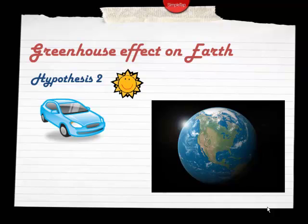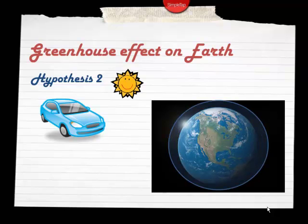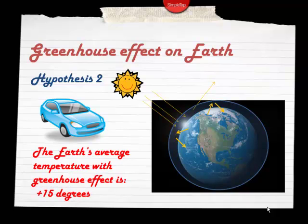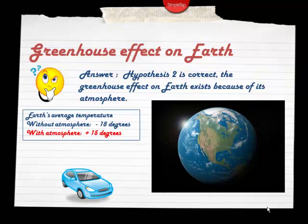The second hypothesis is like Jasmine's car — the Earth would need a roof and closed windows. That's the atmosphere. With the atmosphere, some of the rays are absorbed by the planet, some are reflected back into outer space, but as you can see from the arrows, a lot of the heat is trapped and remains next to the Earth. That's why the Earth's average temperature with the greenhouse effect is plus 15 degrees Celsius.